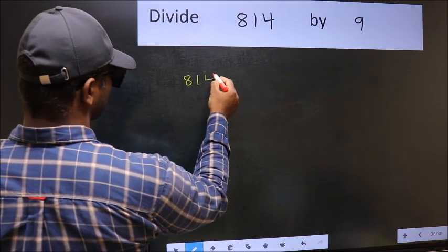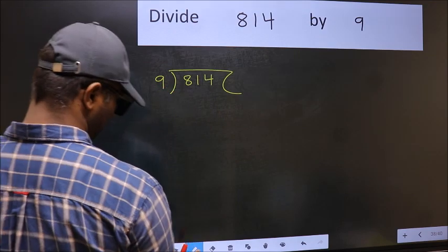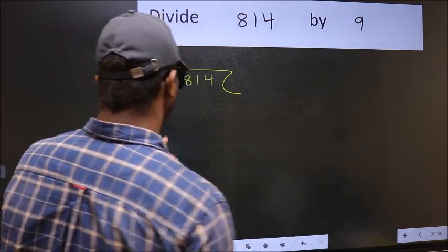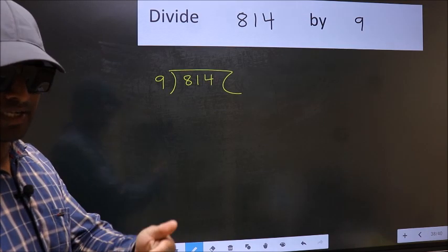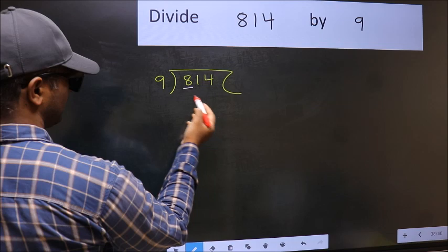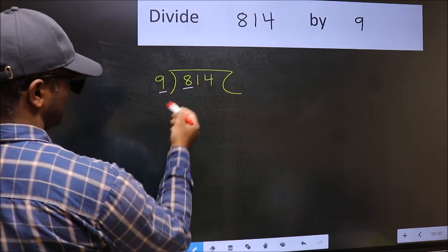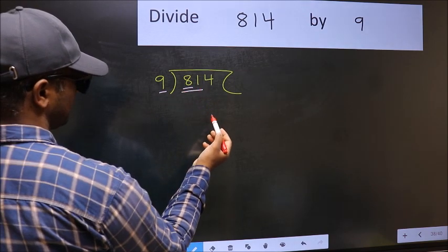814 and 9 here. This is your step 1. Next, here we have 8 and here 9. 8 is smaller than 9. So we should take two numbers, 81.